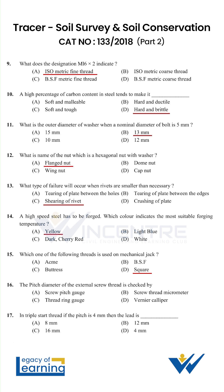The pitch diameter of the external screw thread is checked by Option B: screw thread micrometer. In triple start thread, if the pitch is 4 mm, then the lead is Option B: 12 mm.